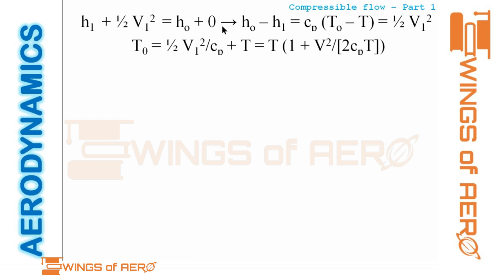At the stagnation point, h₁ + ½v₁² = h₀, because velocity is zero there. Equating gives: h₀ − h₁ = cp(T₀ − T). Rearranging: T₀ − T₁ = v₁²/(2cp), and taking T₁ to one side gives the stagnation temperature relation.